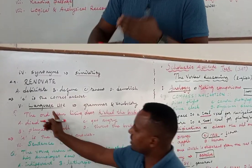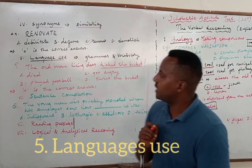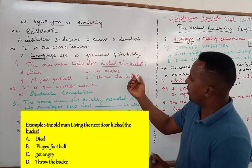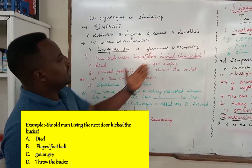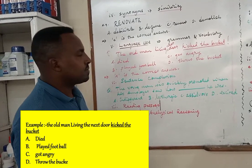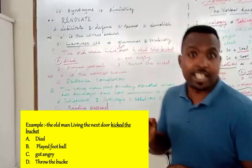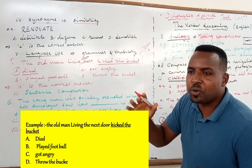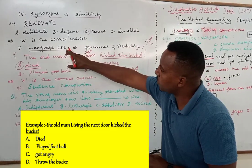We have to work out many examples of language use. Language use is mainly grammar, structure, and vocabulary. For example: 'The old man living next door kicked the bucket.' Now the meaning of that underlined term could be: to die, to play football, to get angry, or to throw the bucket. To kick the bucket means to die — this is an idiomatic expression. Usually you can expect a different expression, not the ordinary one. In most cases, sayings, similes, and idiomatic expressions are involved, as well as hard grammar structures. We'll have these questions in detail at other times.